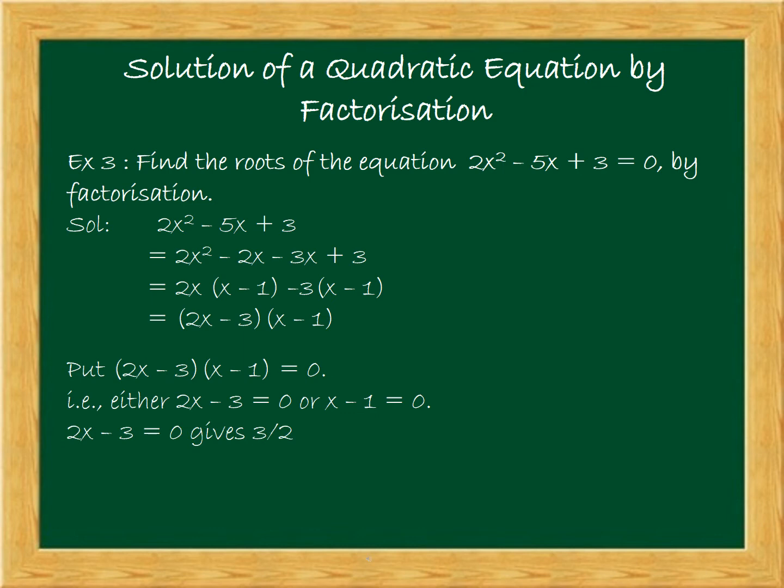2x - 3 = 0 gives x = 3/2. And x - 1 = 0 gives x = 1. So x = 3/2 and x = 1 are the solutions of the equation.